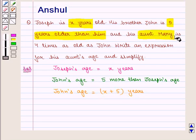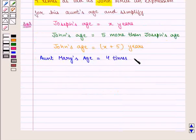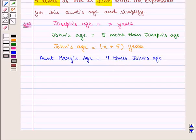His aunt Mary's age is given as 4 times John's age. Here, 4 times means 1 times into 4, which implies Aunt Mary's age is equal to 4 into John's age.